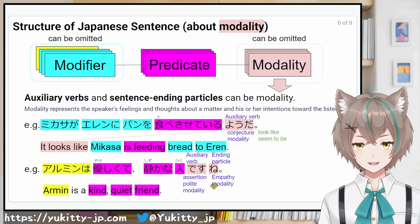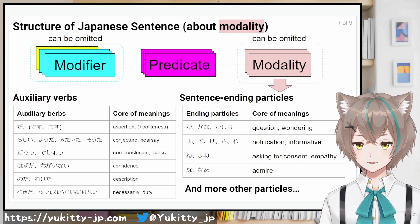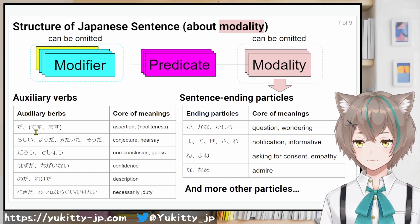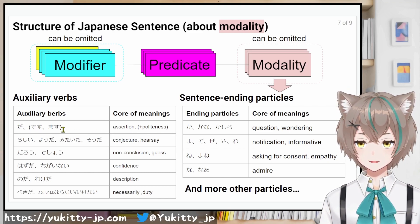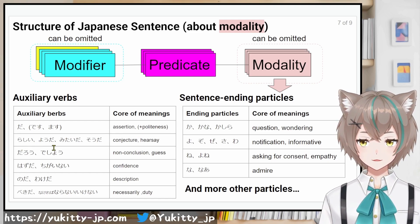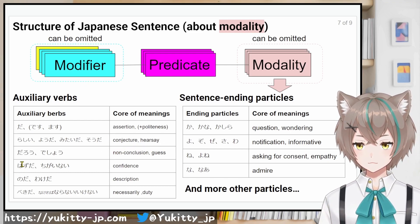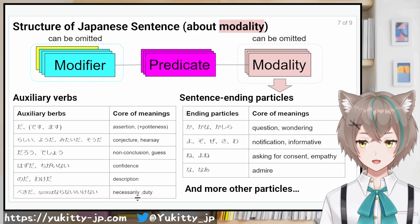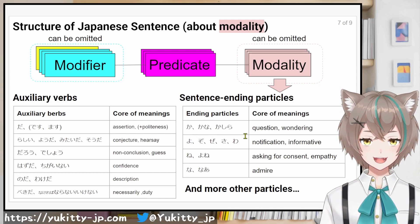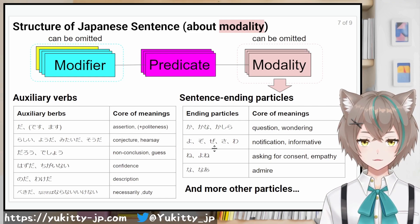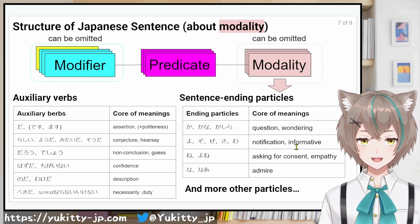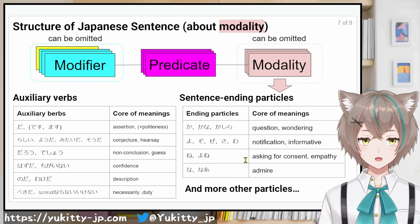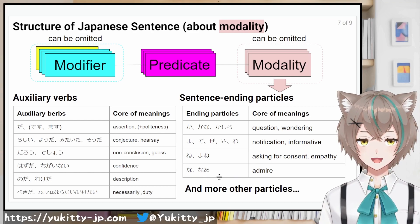Auxiliary verbs include: assertion types (だ、です); らしい、ようだ、みたいだ、そうだ for conjecture; そうだ for hearsay; だろう、でしょう for non-conclusive guessing; はずだ、違いない for confidence; のだ、わけだ for description; べきだ、なければならない、なければいけない for necessity/duty. Sentence-ending particles include: か、かな、かしら for question or wondering; よ、ぞ、ぜ、さ、わ for notification/informative; ね、よね for asking for consent and empathy; な for admiration.